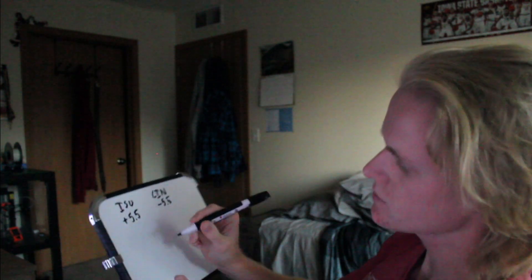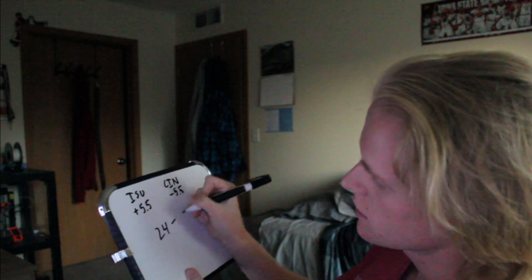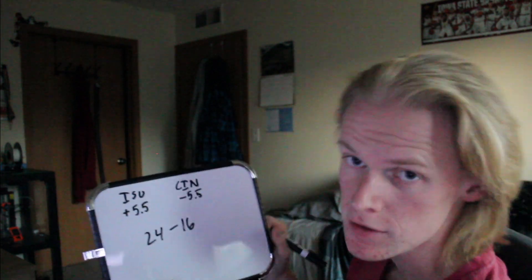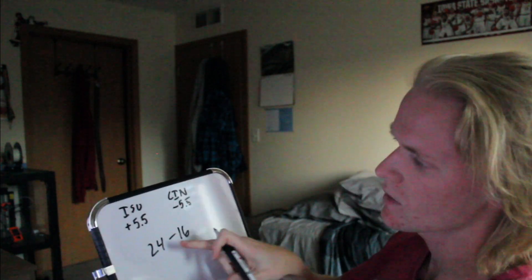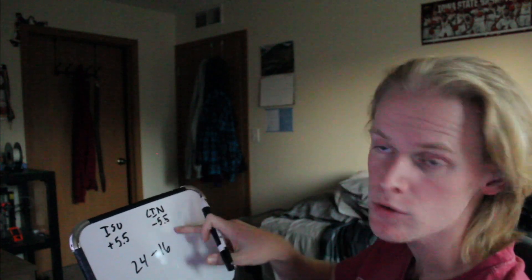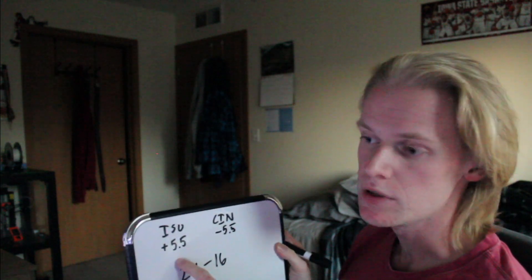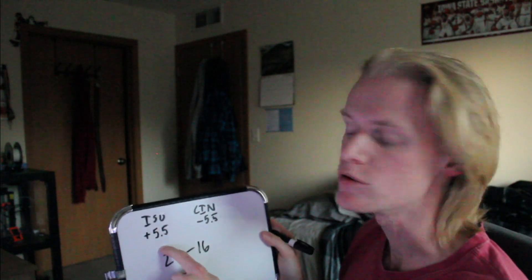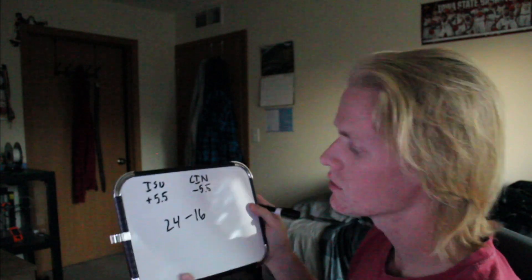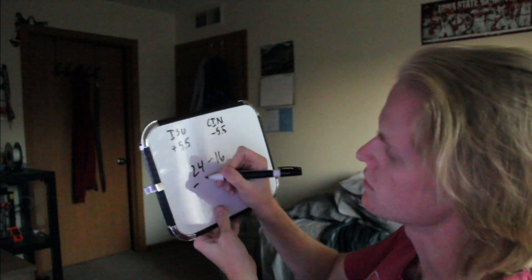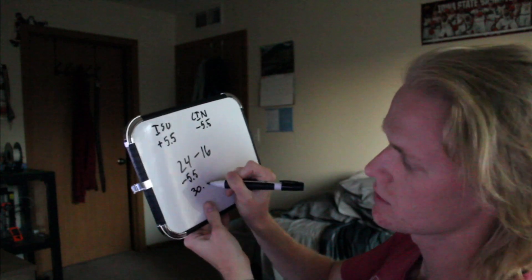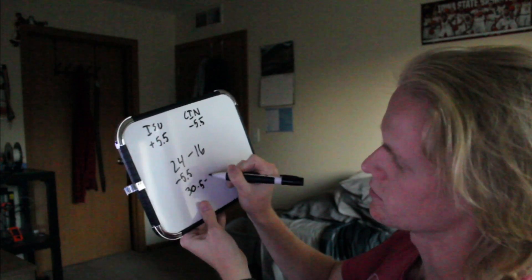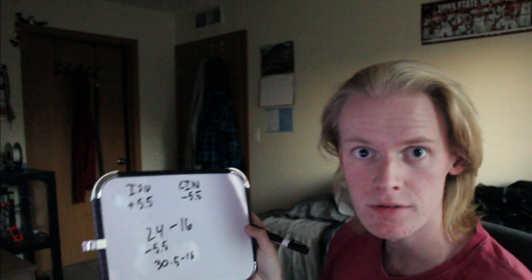So let's say the game ended 24 to 16 — Iowa State won 24 to 16. And you picked — usually you only pick one of these two, it wouldn't make sense to pick both. Let's say you picked Iowa State plus five and a half. So you would add five and a half to their score, which brings the final game result to 30.5 to 16.